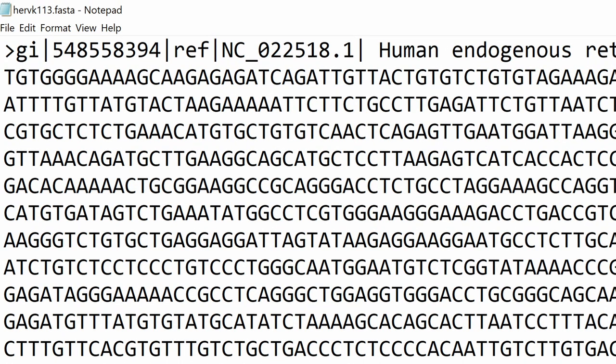After the description line, the second line, as well as any following lines, are assumed to contain the sequence. FASTA files can contain DNA, RNA, or protein sequences. It should be pretty easy, then, to tell what kind of sequence is included in the file just by looking, right?